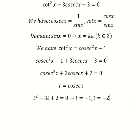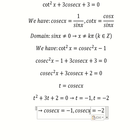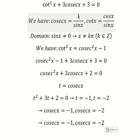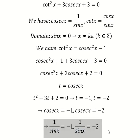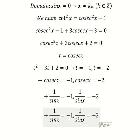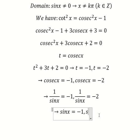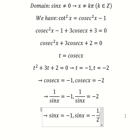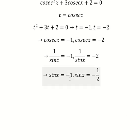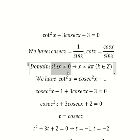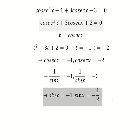So we have t as those values. I will put negative one and negative two back, giving us sine x equals negative one and sine x equals negative one over two. We can see that both of them are not equal to zero, so we can proceed.